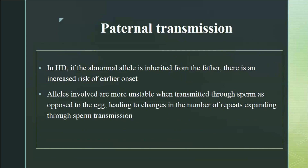Contrary to Fragile X syndrome, in Huntington's disease paternal transmission leads to more instability. When transmitted through sperm, alleles become more unstable, so father-transmitted Huntington's disease has a higher chance of expansion and earlier onset. This is opposite to Fragile X syndrome, where maternal transmission leads to higher expansion risk.